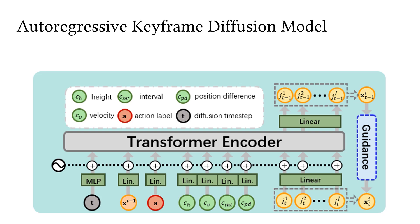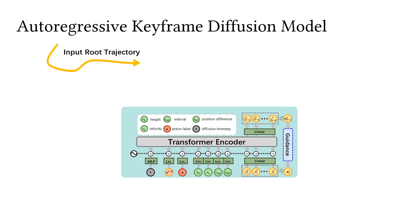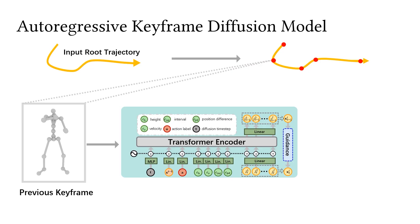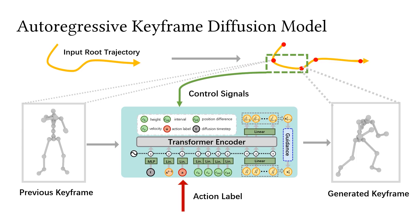Now we introduce our method in detail. We first train an autoregressive keyframe diffusion model, AKDM. Given a 3D route trajectory with user-specified keyframe timing, AKDM autoregressively takes the previous keyframe, action label, and various control signals derived from the trajectory to generate a new keyframe. Complete motions can be obtained by infilling the generated keyframes using established motion completion techniques.